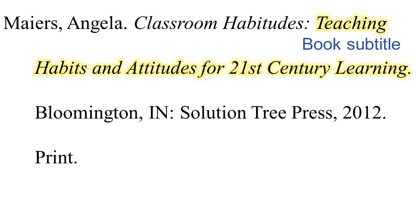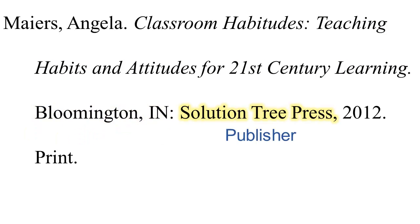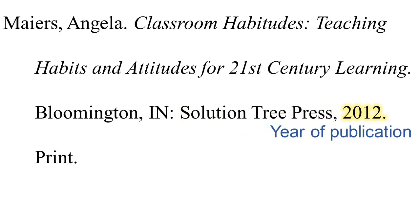Next comes the place of publication and publisher name, followed by the year of publication. Be sure to put a colon between the place of publication and the publisher name, a comma between the publisher name and the year of publication, and place a period after the year of publication.